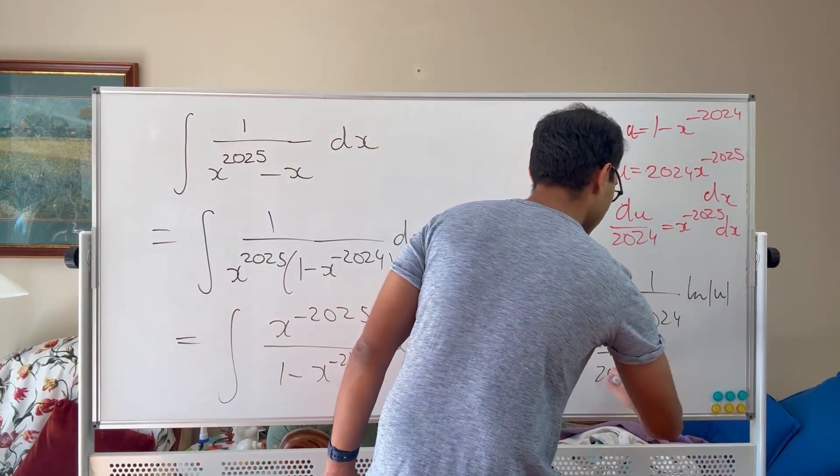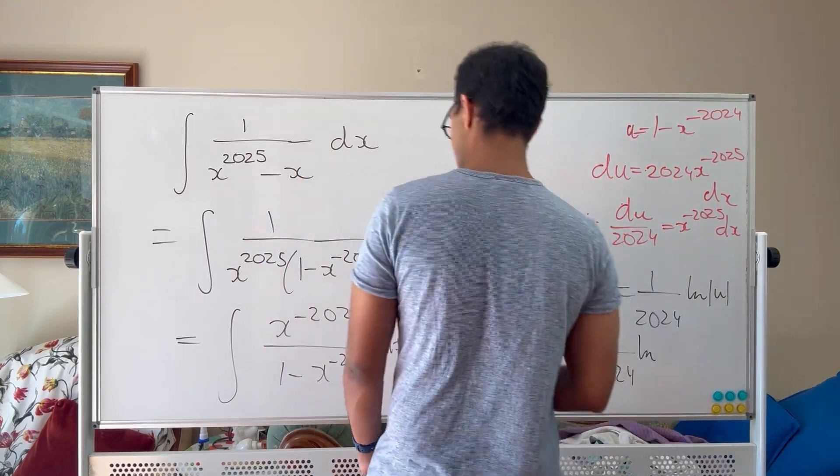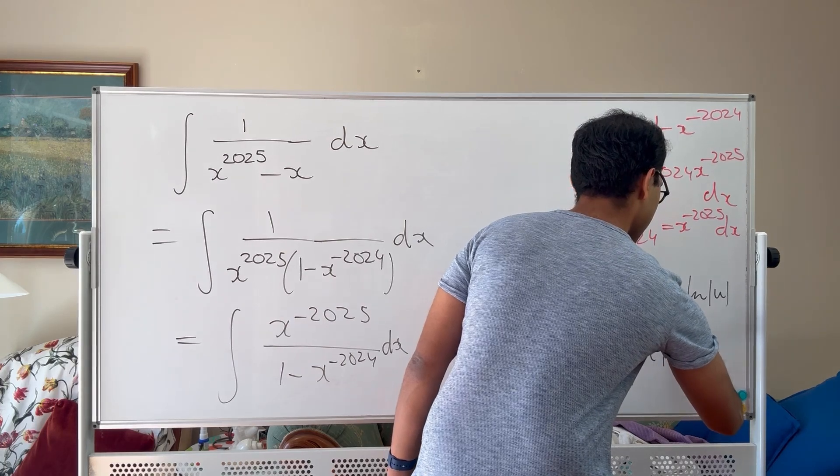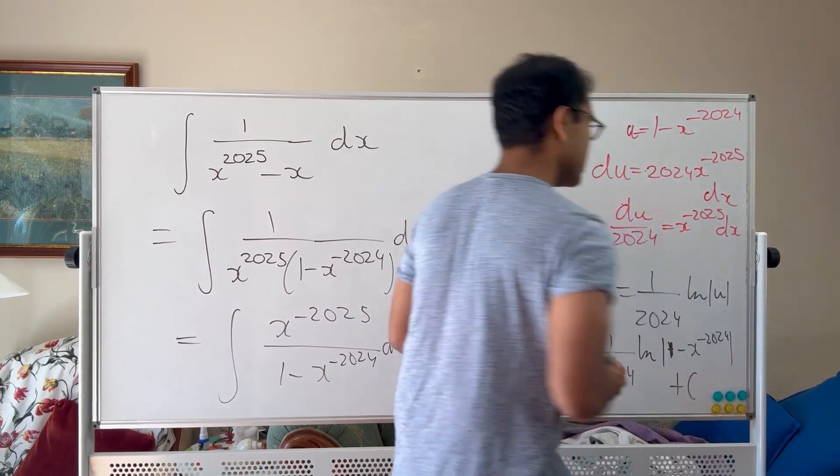We're just going to write it out as 1 over 2024 times what is u, so it's going to be log of, we're going to have u is 1 minus that, so it's going to be 1 minus x to the negative 2024, and then you can add on a constant.